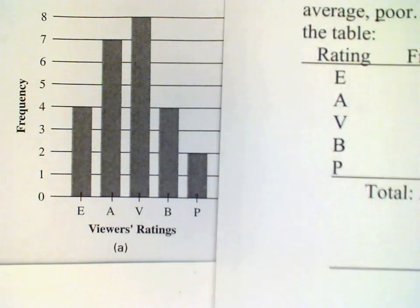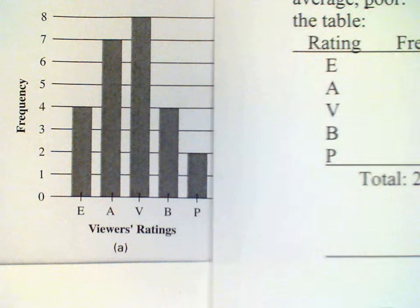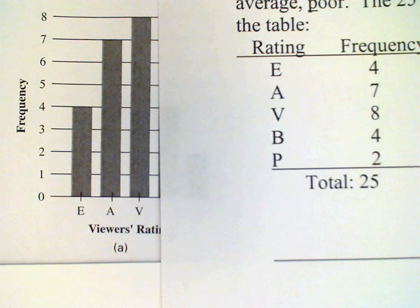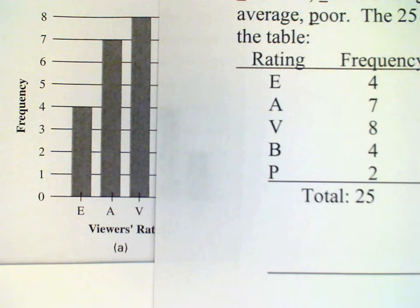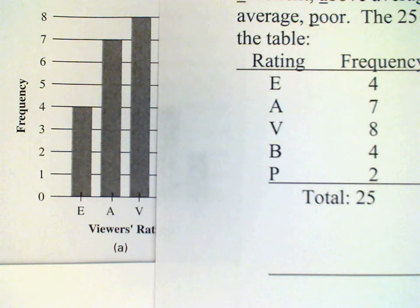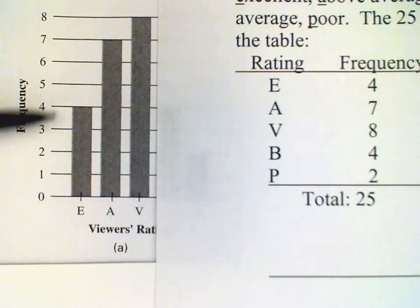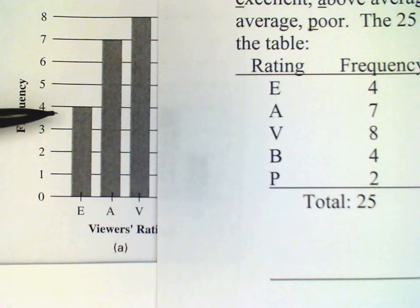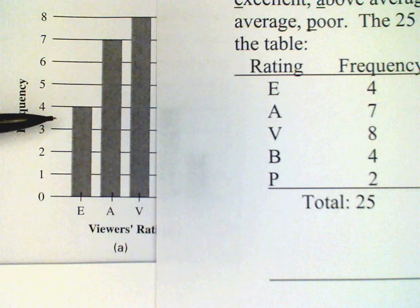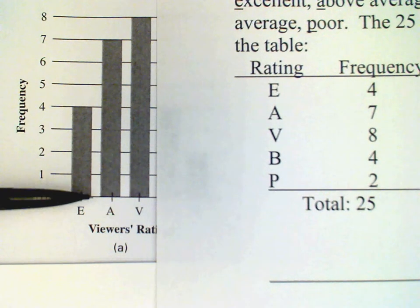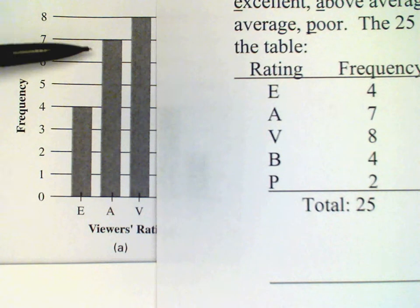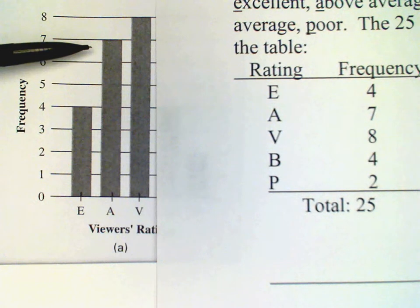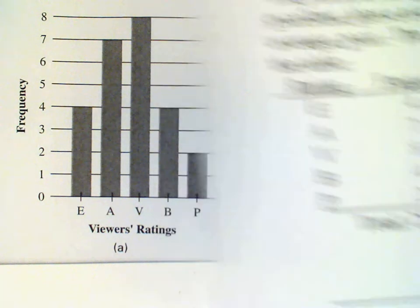So the rating of 4, for example, means that 4 viewers rated the program excellent, and so the bar labeled E has a height of 4. The response A, meaning above average, 7 viewers ranked the program with an A, so the height of the bar is 7, and so on.